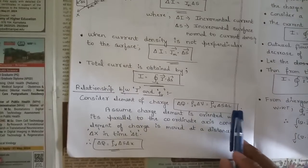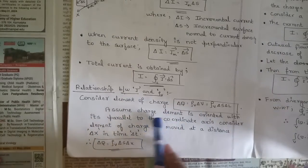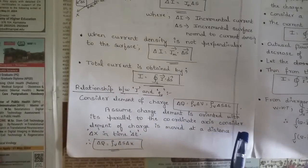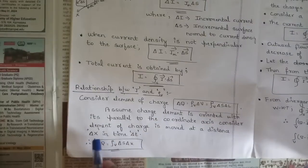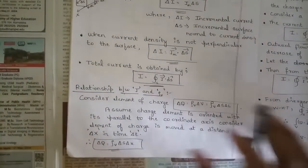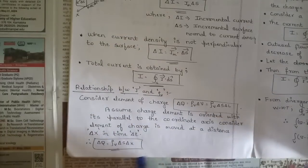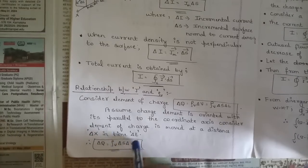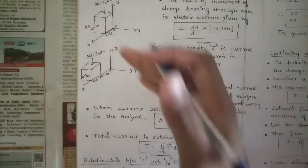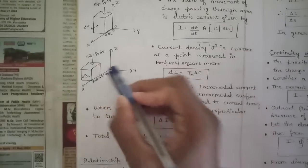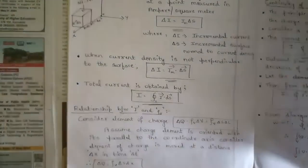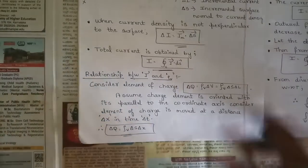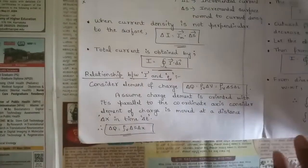Assume the charge element is oriented parallel to a coordinate axis. Consider the element of charge moved a distance Delta X in time Delta T. The final change in charge is given as Delta Q = rho_V · Delta S · Delta X. When the 3D object is moved in a particular path, this space Delta X is created, which gets multiplied when the incremental charge is applied.